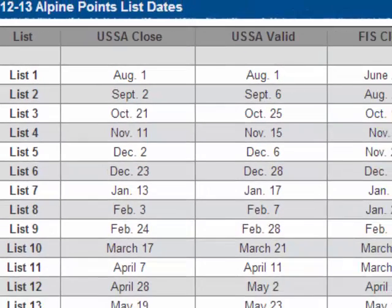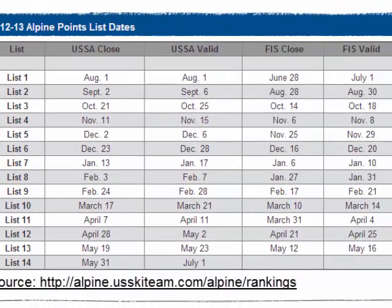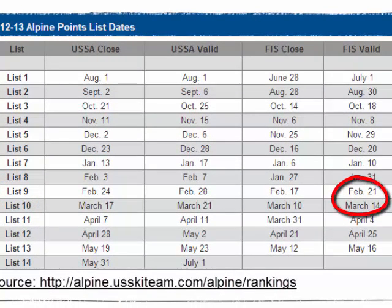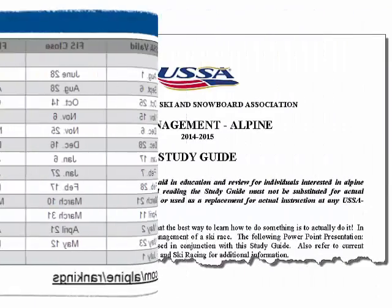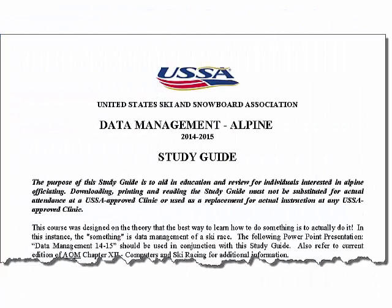In contrast, FIS list 9 was valid from February 21st through March 13th, so you would have used FIS list 9 throughout your race series. For more information, see the latest edition of the Data Management Study Guide.